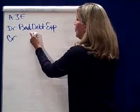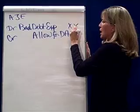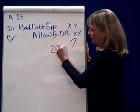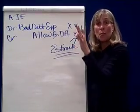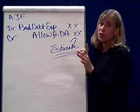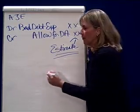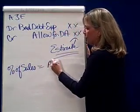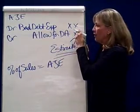We credit the allowance for doubtful accounts. The numbers in this adjusting entry are an estimate — I don't know exactly who is going to not pay me, but I know somebody is going to. There are two ways to calculate this estimate. The first is the percentage of sales method, which gives you the amount of the adjusting journal entry directly — whatever the percentage is of net sales, that's the amount of this entry.